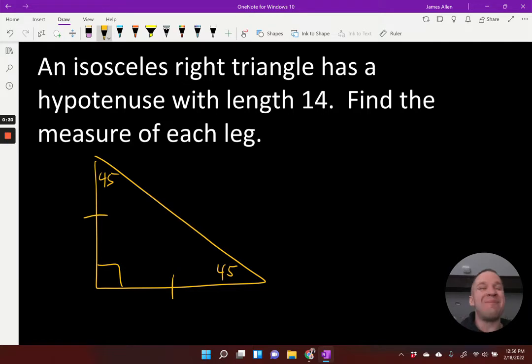Okay, I'm not lying. All right, the hypotenuse is 14 and I want to find the measure of each leg. Well, if I have my hypotenuse, how do I get back to the leg? I would need to divide by root 2.